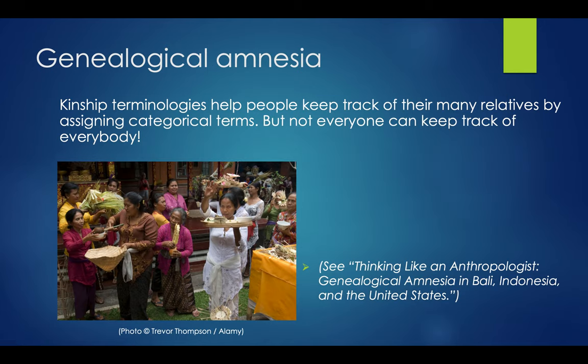Kinship terminologies help people keep track of many relatives by assigning categorical terms, but it's still impossible for everyone to keep track of everybody. This leads to the concept of genealogical amnesia — there's no way to simply keep track of every possible familial or kinship distinction. We tend to condense terms and cast a wide umbrella over relatives within just a certain generation.